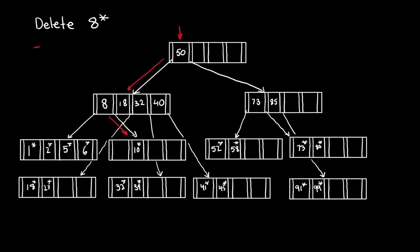We need to check if the B+ tree properties hold. This data entry is now less than half full, so the tree is not a valid B+ tree. We need to check if any of the sibling entries have space to hold the values of this less-than-half-full entry. Looking at the left, we see there is one sibling entry but it is completely full. Looking at the right, the sibling entry right next to it has space to hold 10.